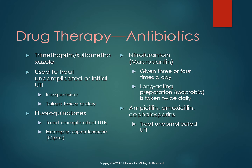Other drug options are fluoroquinolones like Cipro for complicated UTIs, and Macrodantin or nitrofurantoin for complicated UTIs. However, there are some drug alerts with Macrodantin, such as photosensitivity — so we want to tell patients to avoid sunlight, wear sunscreen, and wear protective clothing — and there's an increased risk for allergy with nitrofurantoin, so watch for cough, dyspnea, rash, fever, and chills.